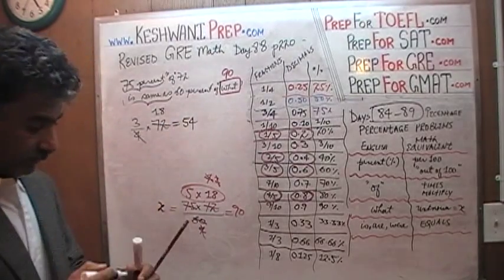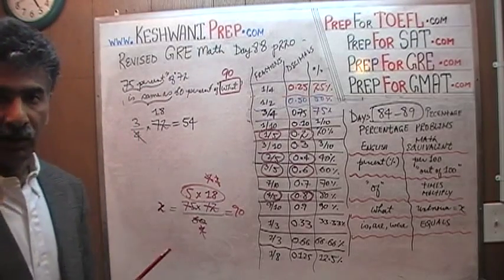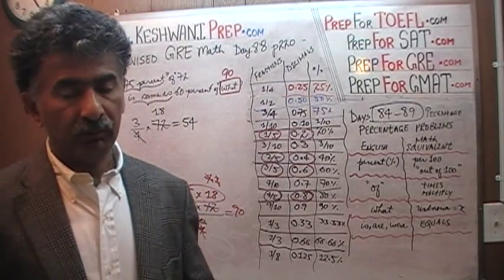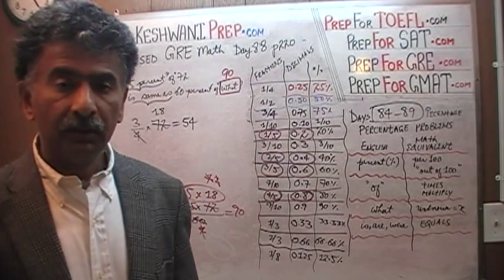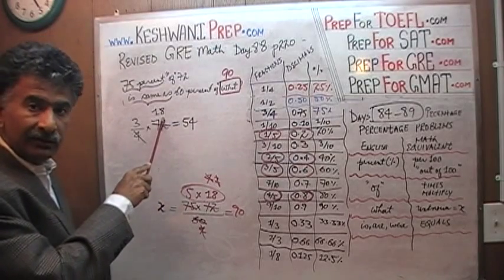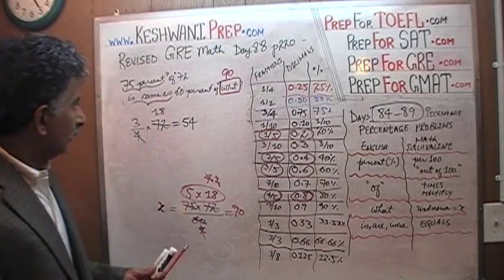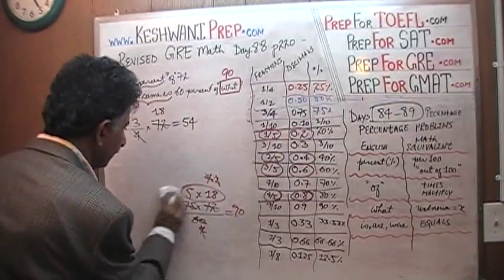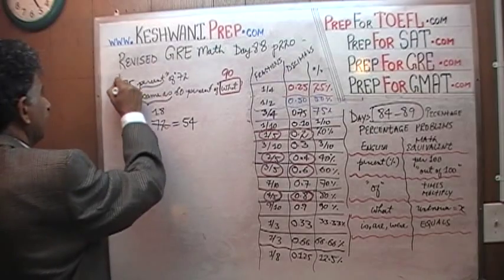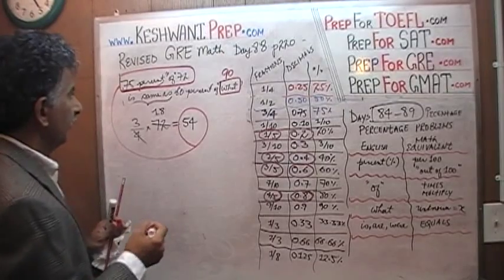One way to find 18 times 3: I know 20 times 3 is 60, and since 18 is 2 less than 20, subtract three twos — 60 minus 6 is 54. Another way: 15 times 3 is 45, and 18 is 3 more than 15, so add three threes — 45 plus 9 is 54. So 75% of 72 is 54.